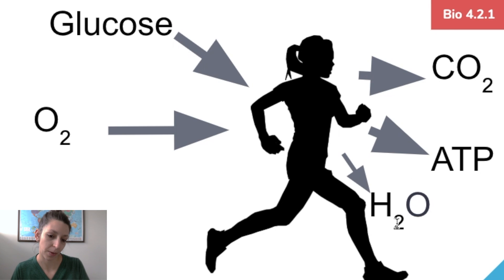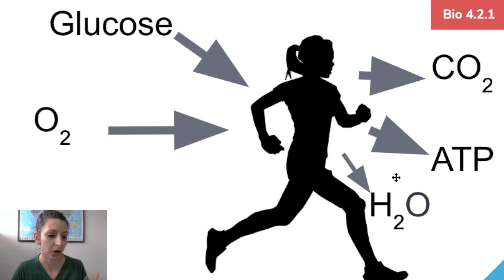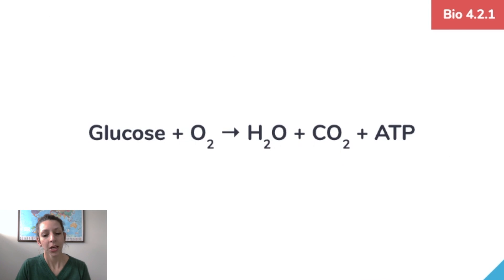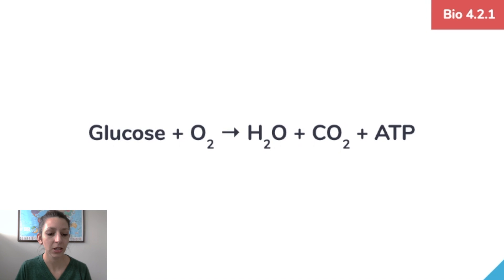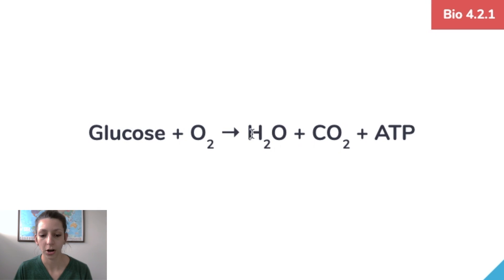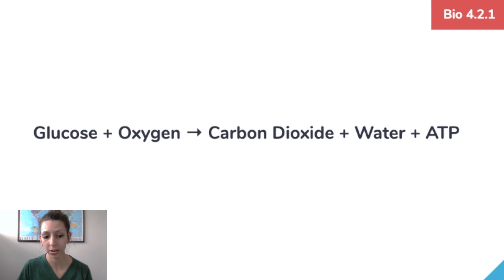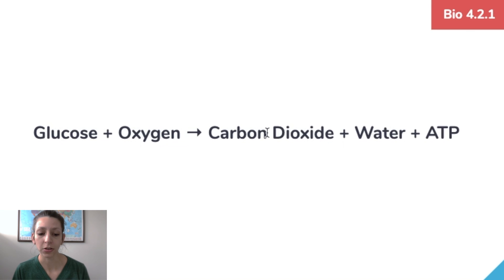Water vapor is another byproduct — you can see it when you exhale on a cold day. The cellular respiration equation reads: glucose plus oxygen yields water, carbon dioxide, and ATP. You might need to recognize it as an equation or through words: glucose and oxygen yield carbon dioxide, water, and ATP.